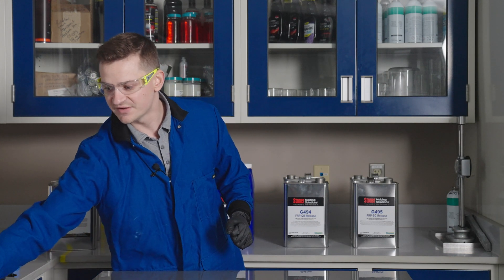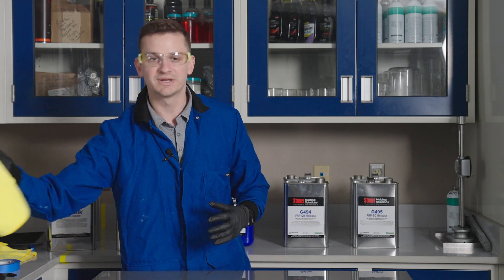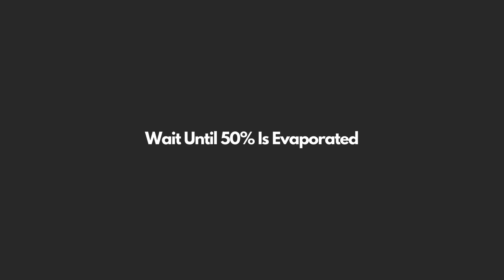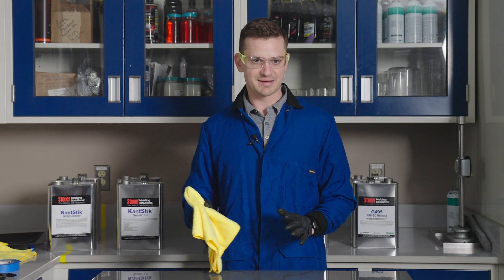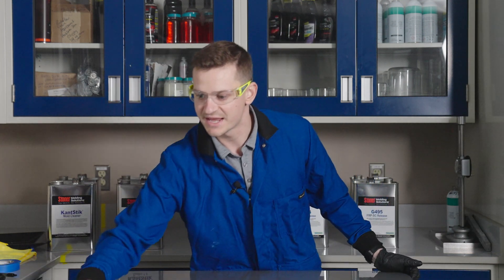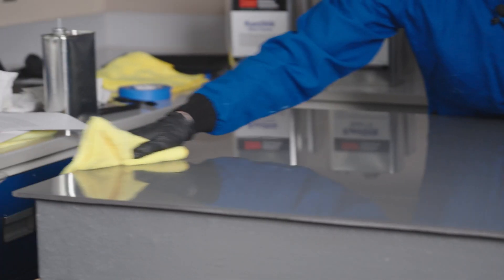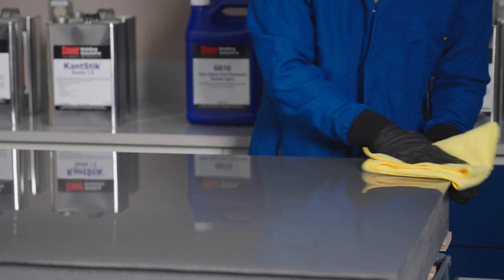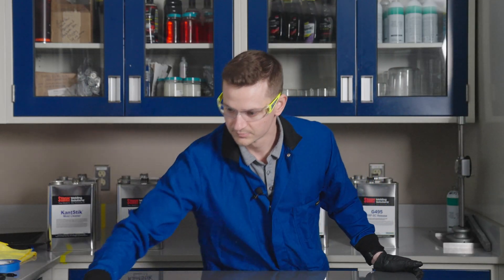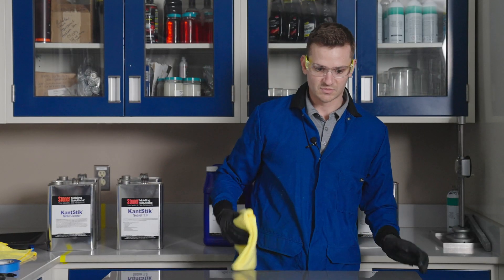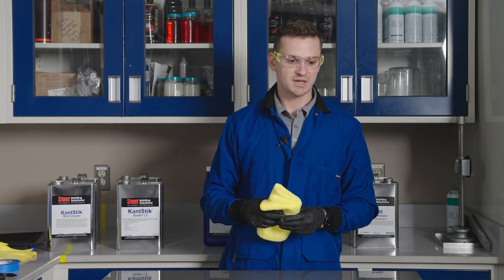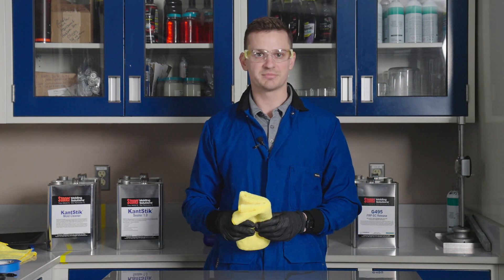Buffing provides the A-finish that is often needed. If you don't need an A-finish, you can leave the sealer on and let it dry. Now that the mold sealer is about 50% evaporated, we're going to buff it off using a microfiber towel. Typically we wait 15 minutes before applying another coat, and if this is your last coat, you want 30 minutes for a final cure.